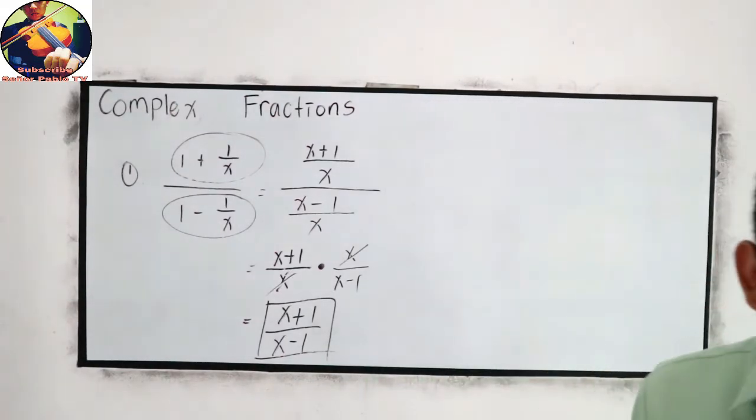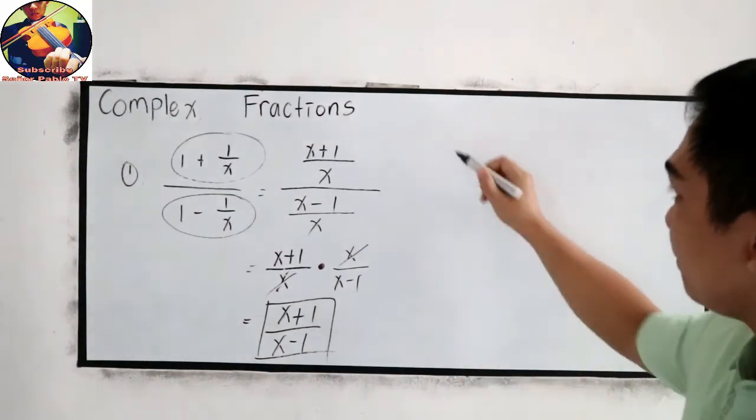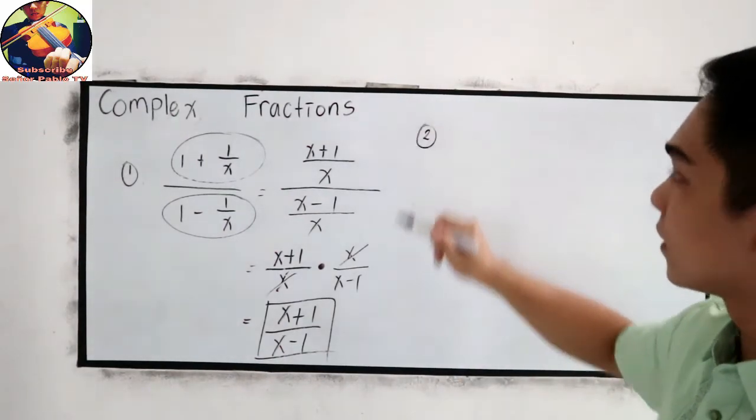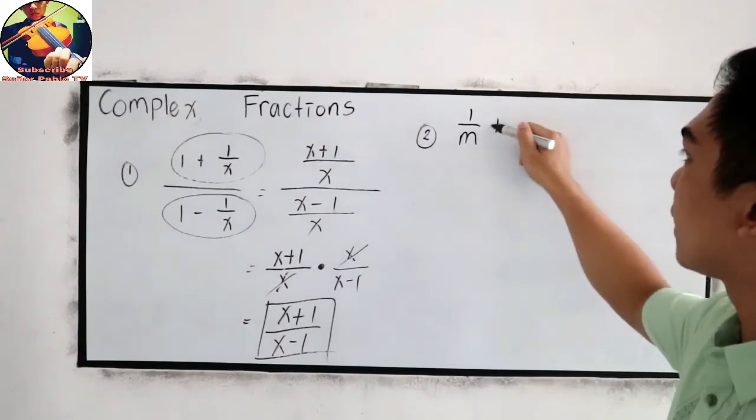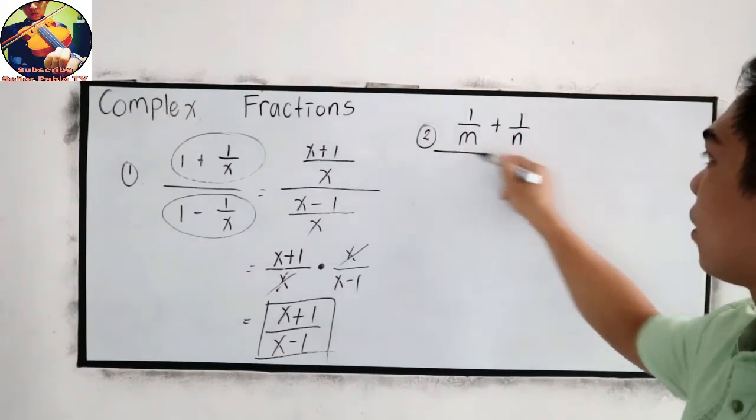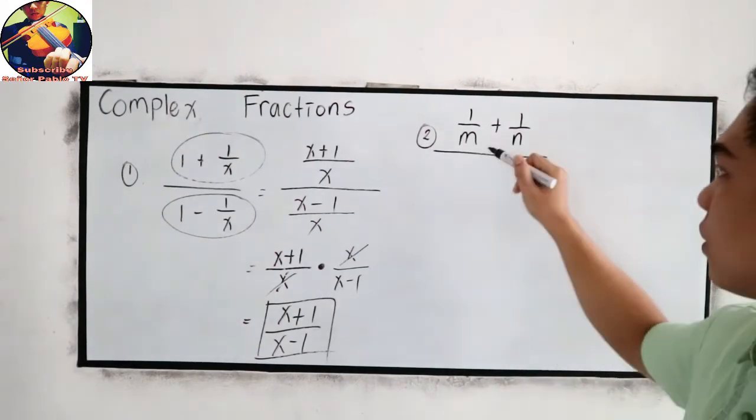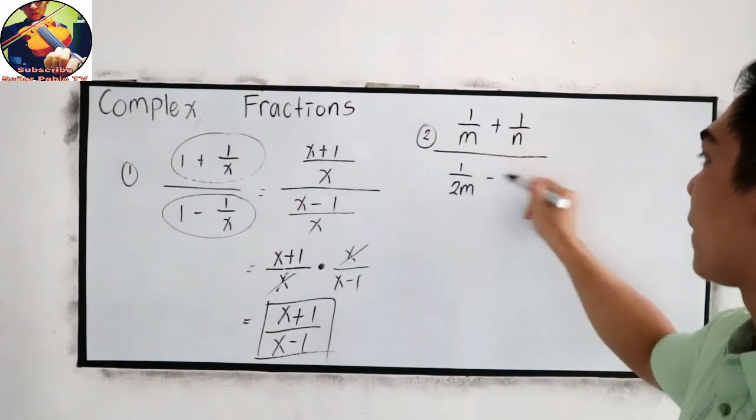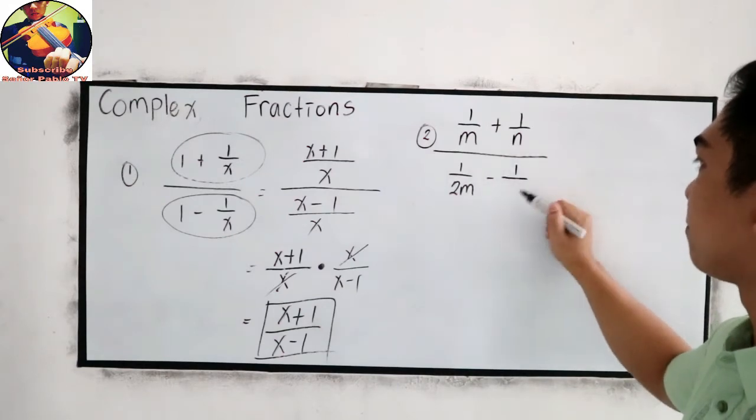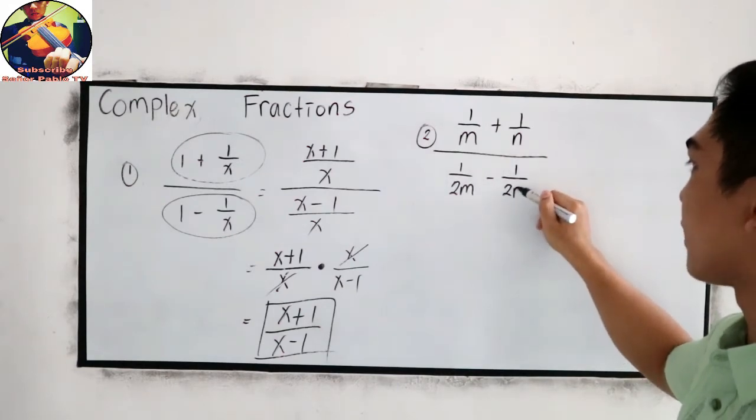Next, number 2. Number 2 example. Let's say 1 over m plus 1 over n all over 1 over 2m minus 1 over 2n.